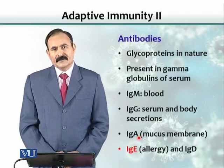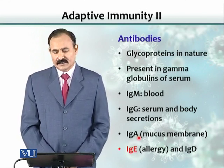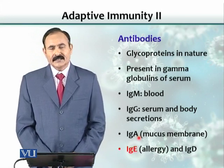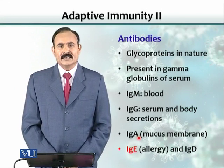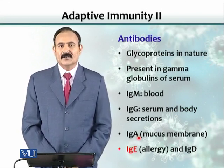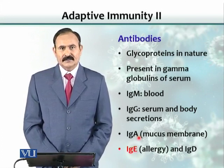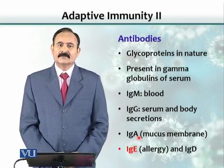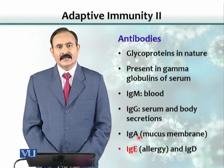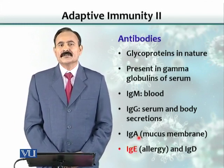Antibodies, by definition, are glycoproteins in nature. If you fractionate serum by electrophoresis, you would find these antibodies in the gamma globulin portion of the serum. Different antibody molecules have different molecular weights. For example, IgM is a class of antibodies largely confined to the blood vascular system because of its larger molecular weight. IgG is present in the serum and blood circulation system, but is smaller in molecular weight compared with IgM, so it can be found in body secretions such as milk, saliva, and body fluids like the peritoneal and thoracic cavities.